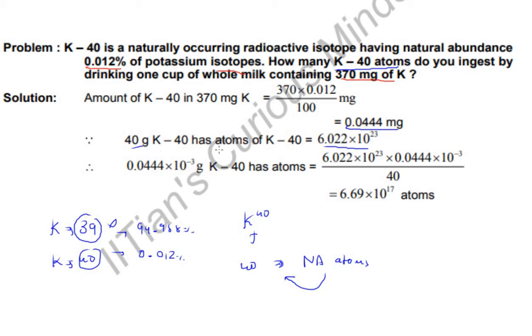So 0.0444 times 10 to the minus 3 - how many atoms will be? Simple. This will be 6.022 times 10^23 times 0.0444 times 10^-3 upon 40. You get the answer as 6.69 times 10^17 atoms.